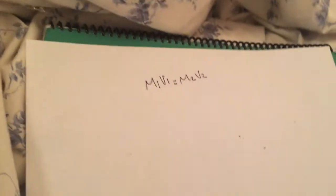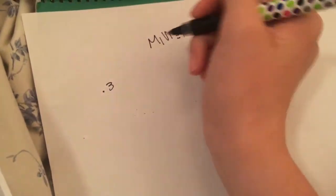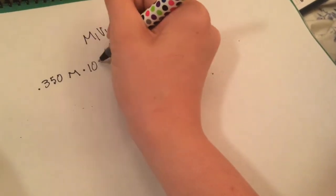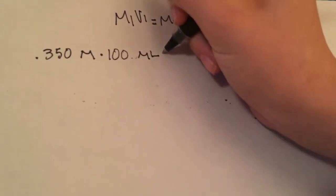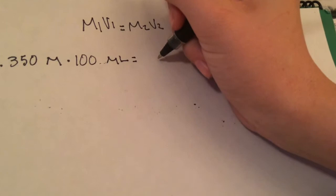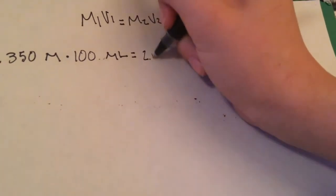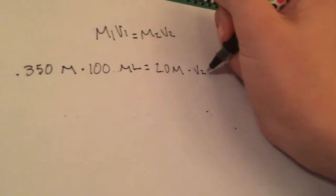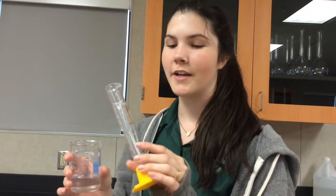We are given 0.350 molarity so we're going to use M1 times 100 milliliters, which is V1, equals 2.0 M times V2. My writing sucks! Now we're going to measure 18 milliliters of stock solution.